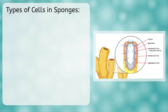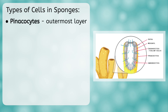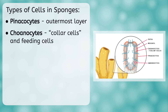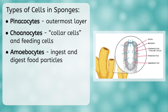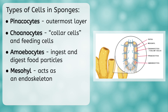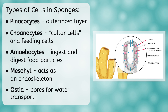The five types of cells are: Pinacocytes, which comprise the outermost layer and act almost like skin. Coanocytes, or collar cells, that line the inner portions. They are also known as feeding cells because each contains a flagellum that traps tiny organisms as water filters through. These organisms are then moved into the amoebocytes cells to be digested. Amoebocytes ingest and digest the particles trapped by the collar cells and then transport the nutrients to other cells in the sponge. Mesohyl, which are cells of a jelly-like substance that act as an endoskeleton between the pinacocytes and the coanocytes. Finally, the last type of cell is the ostia – pores that allow water to enter the organism.